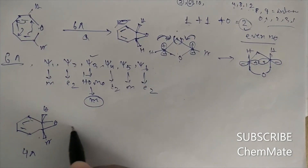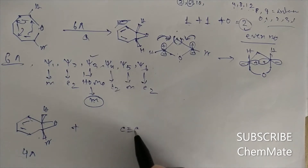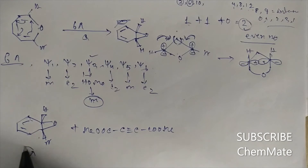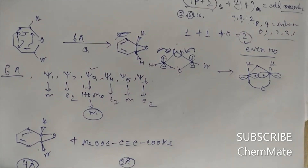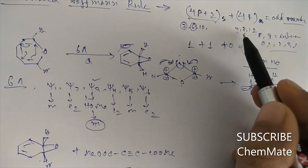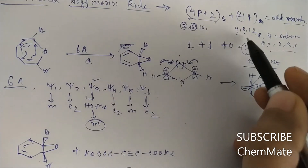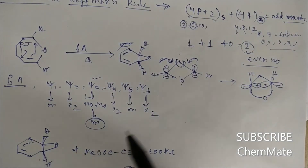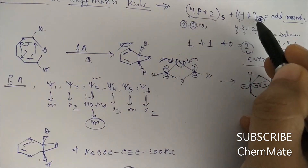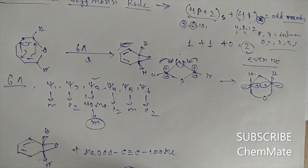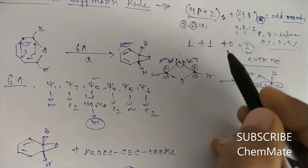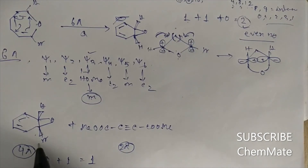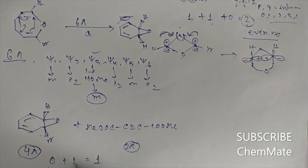This new component, which now has 4π electrons, can react with the 2π component. Applying the Woodward-Hoffmann rule: the 4π component in antara mode is not applicable for pericyclic reactions, so the number of 4q antara components equals 0. The 2π system reacts in supra mode, contributing 1. The total count is 0 plus 1 equals 1.